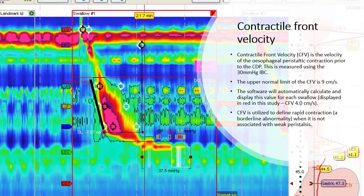The contractile front velocity is the velocity of the esophageal peristaltic contraction prior to the contractile deceleration point. This is measured using the 30 mm isobaric contour. The upper normal limit of the contractile front velocity is 9 cm per second.